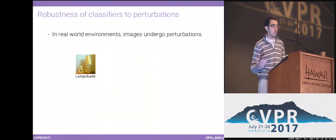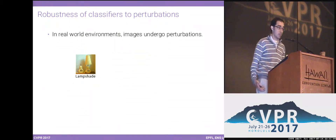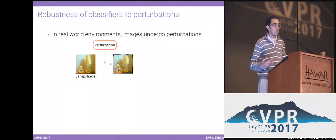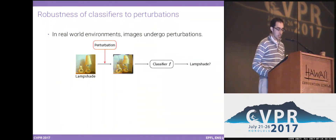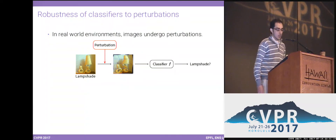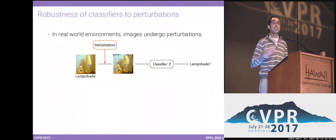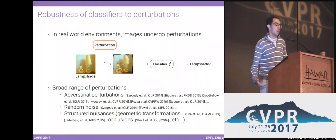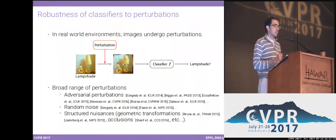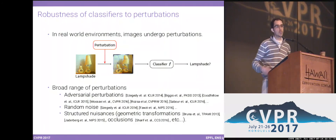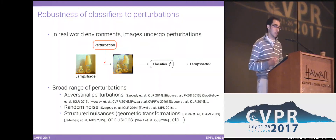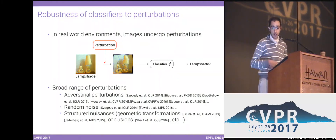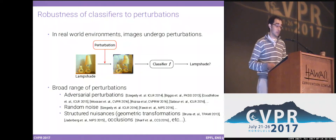What do I mean by robustness? It's actually something very simple. If I have an image of a lampshade that is correctly recognized by my deep network as a lampshade, and I perturb my image just a little bit, and then input this to my classifier, I want the output to also be a lampshade. Depending on the application, one might be interested in different kinds of perturbations — for example, adversarial perturbations, random noise, or structured noises for computer vision applications.